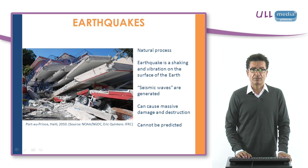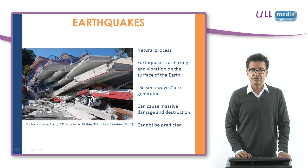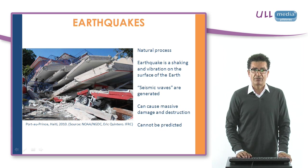Earthquakes. One of the most frightening and destructive phenomena of nature is an earthquake. We can define an earthquake as a shaking and vibration on the surface of the earth, resulting from underground movement along a fault plane or from volcanic activity. In the process, vibrations called seismic waves are generated. These waves travel outward from the source of the earthquake over the surface and through the earth at varying speeds. This vibration can cause massive damage and destruction. Earthquakes cannot be predicted, though areas most at risk can be identified. Scientists are continually thinking of ways to try to reduce earthquakes' power.